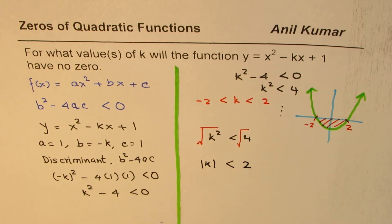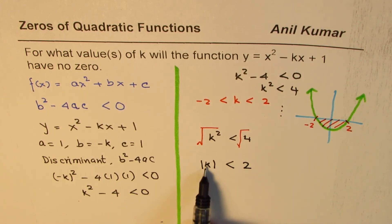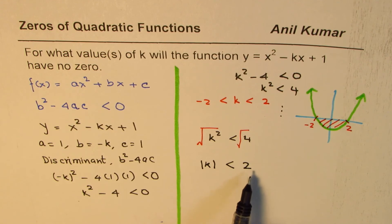That is what it means, so the absolute value of k is less than 2 means that k is between 2 and -2, and that is how we really get the solution.